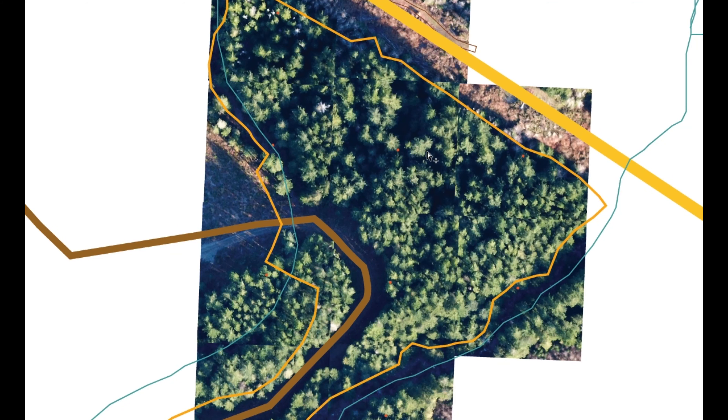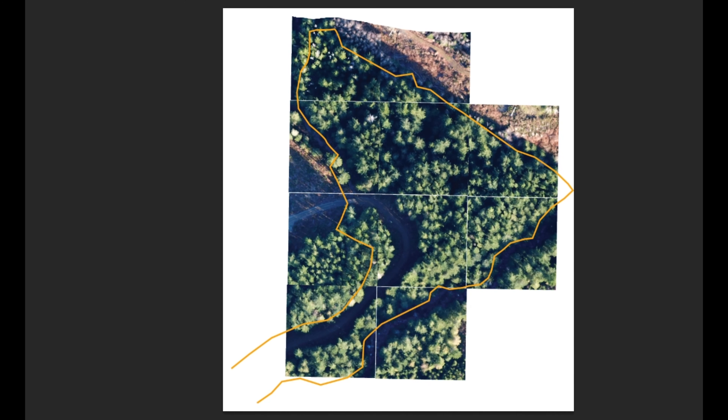I want to figure out how many stems per hectare there are and if possible what the species of those stems per hectare are, so how on earth do we go about doing that?